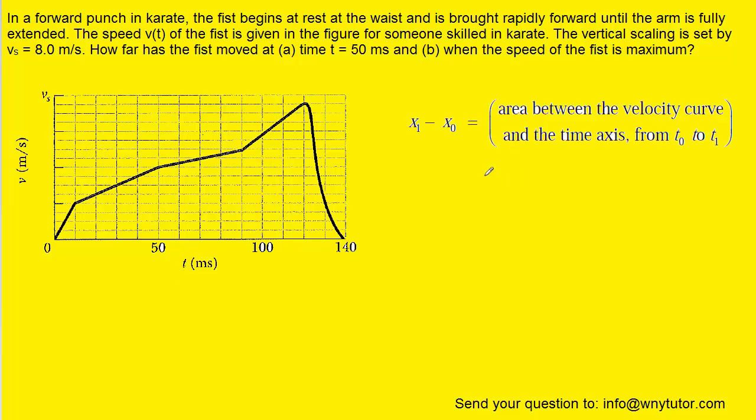So let's take a look at that. The displacement of a moving object would be equal to the area between the velocity curve and the time axis from the initial time to the final time.